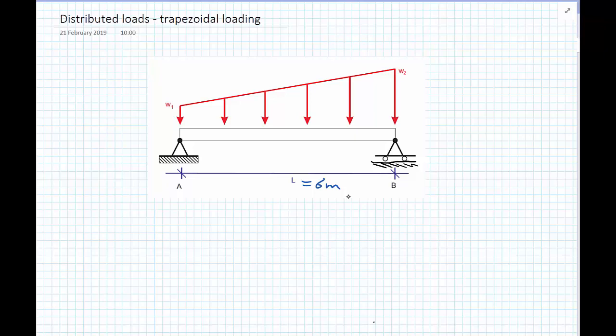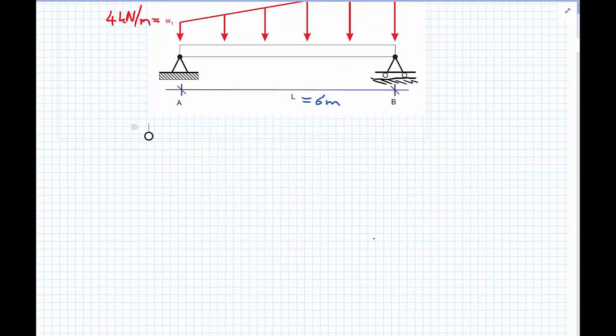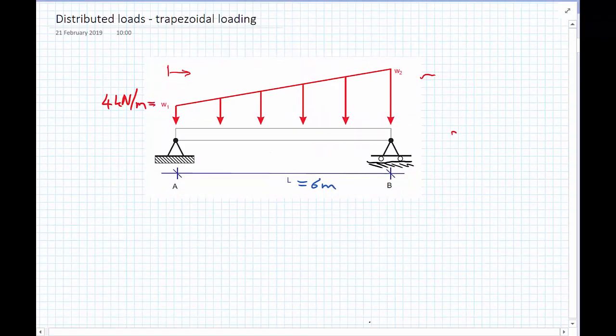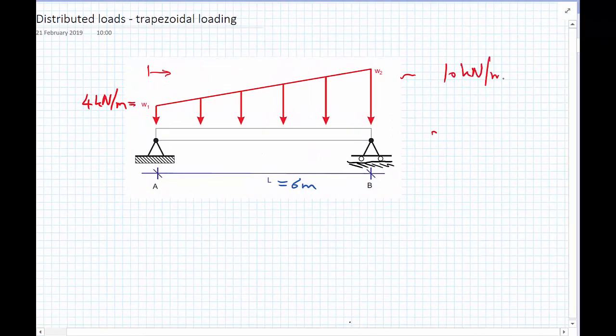At one end of the beam A, the load intensity is 4 kilonewtons per metre. And remind you, the per metre means per metre along the beam. And at the other end of the beam, the load intensity has risen to 10 kilonewtons per metre.